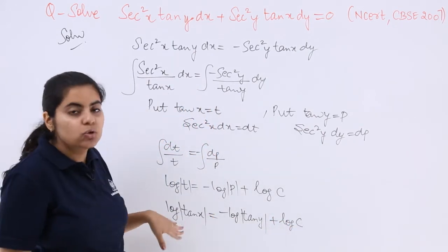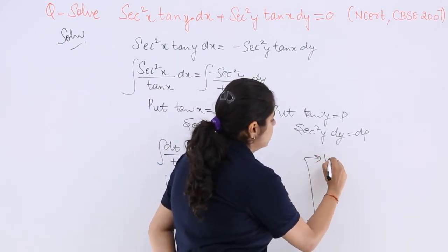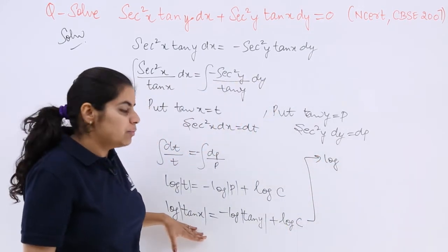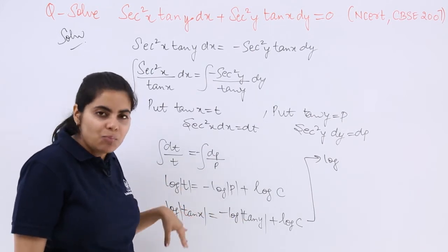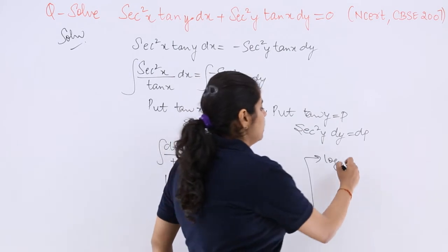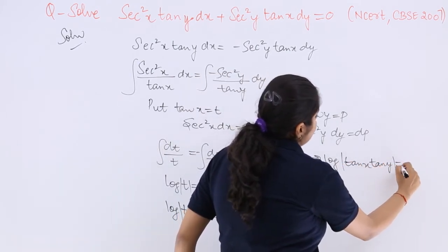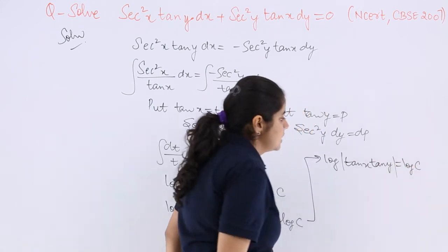Now this is a minus sign, goes to the other side, becomes a plus sign. Let me write the further part of the solution here. So log tan x + log tan y. Now log m + log n = log mn. So tan x tan y = log c.